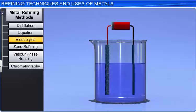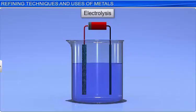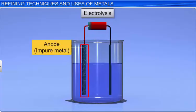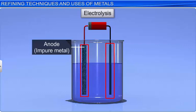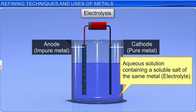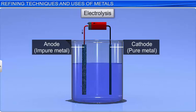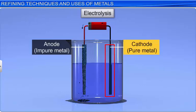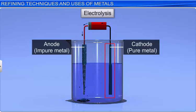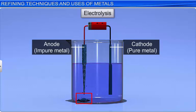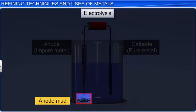In electrolytic refining, the impure metal is made the anode and a strip of the same metal in its pure form is made the cathode. An aqueous solution containing a soluble salt of the same metal is used as the electrolyte. On passing electricity, pure metal is deposited on the cathode. The more basic impurities go into the solution, while the insoluble impurities, particularly the less basic ones, settle at the bottom of the anode as anode mud.